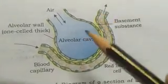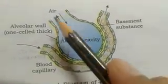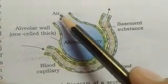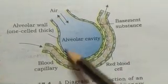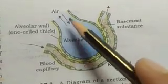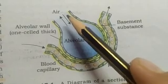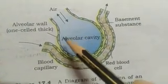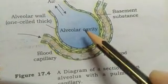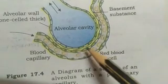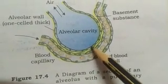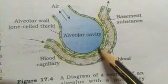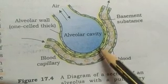Let's see how many diffusion membranes there are. There are three major layers of diffusion membrane. Namely: thin squamous epithelium of alveoli — this one — thin squamous epithelium of alveoli.